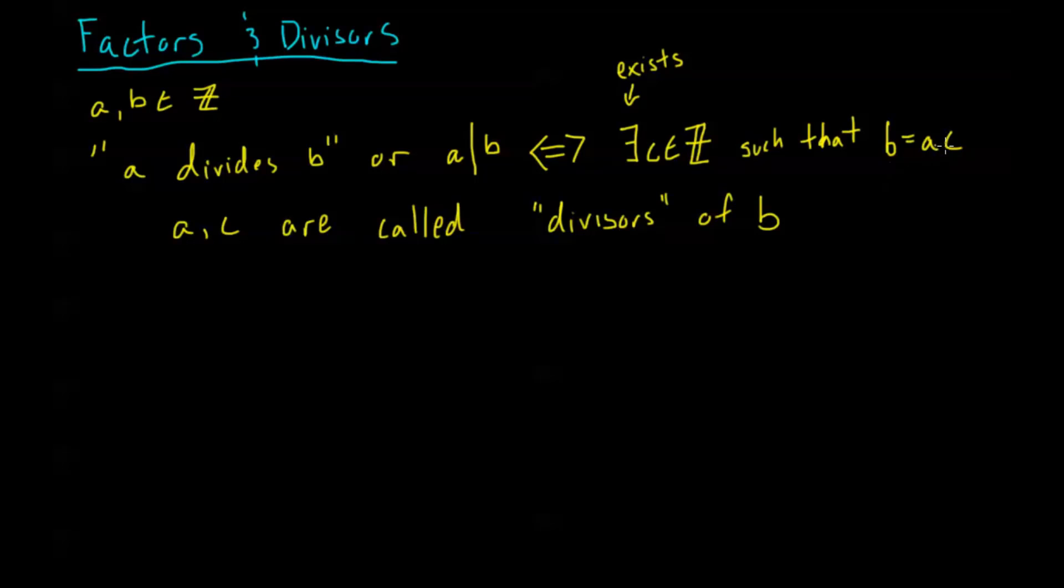Right, we see here, I can say the exact same thing here, C must divide B because there exists an A such that B equals A times C, right? So these are both divisors of B.